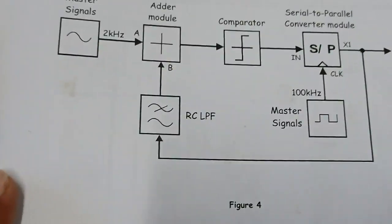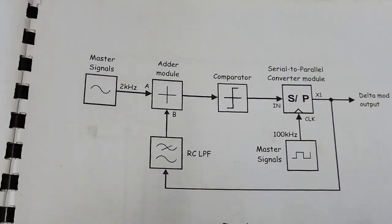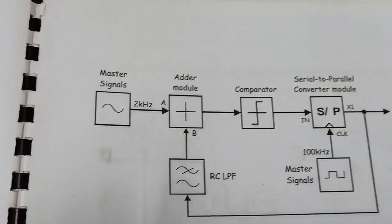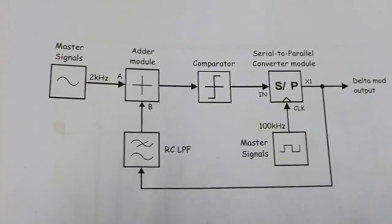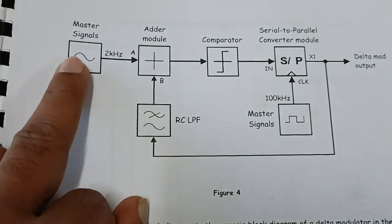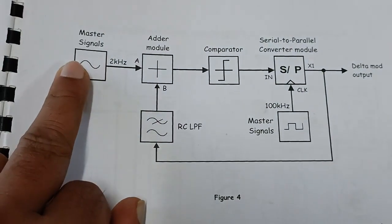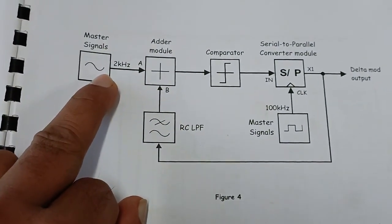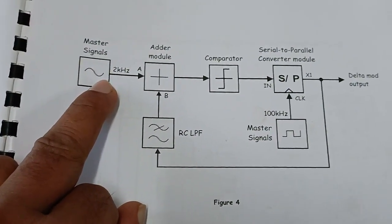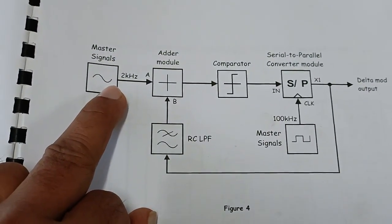This is the main block diagram that I will use in the telecom trainer circuit. The master signal is a 2 kHz sine wave, which is the analog signal that we have to modulate using delta modulation.